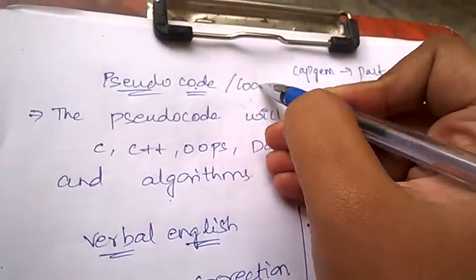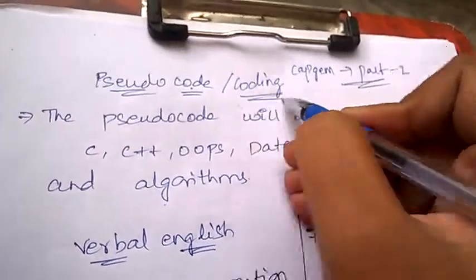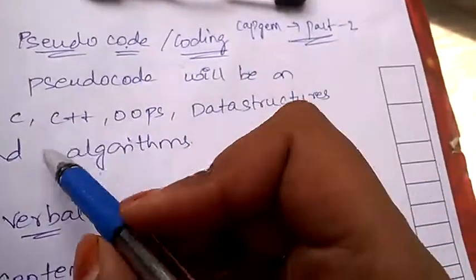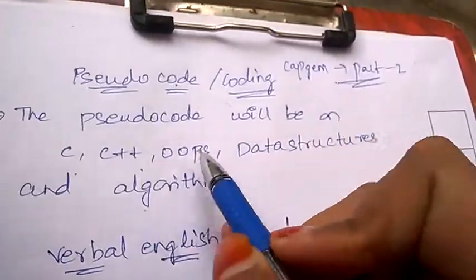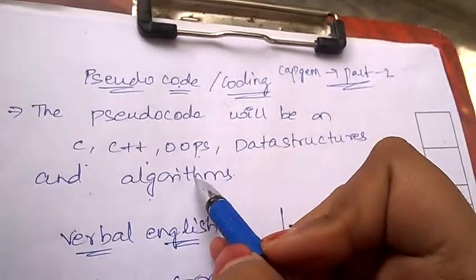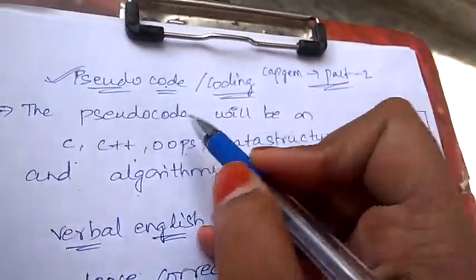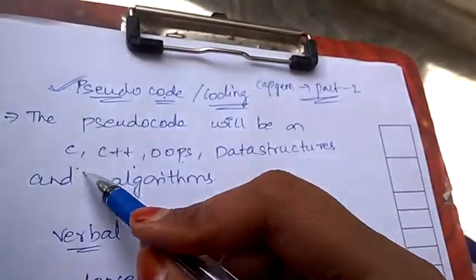The written test in round one will include pseudocode on C language, C++, OOPs, Data Structures, and Algorithms. So in order to crack this section, you need to have the basic fundamental knowledge on C, C++, OOPs, Data Structures, and Algorithms.